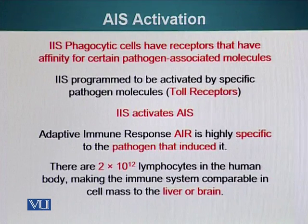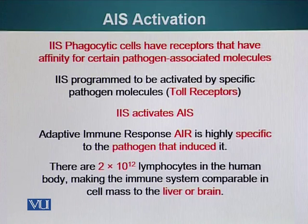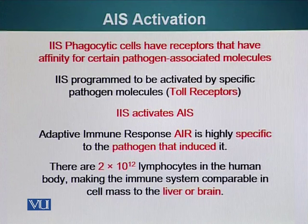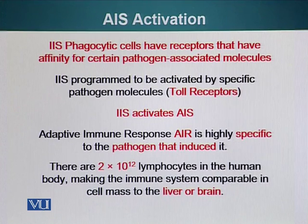All adaptive immune responses have to be activated by innate immune responses. The innate immune response is the activation of phagocytic cells that have receptors with affinity for pathogen-associated molecules. These special receptors, mentioned earlier, are very primitive evolutionarily and are called toll receptors. These phagocytic cells of the innate immune system have toll receptors and they get activated when a pathogen binds them.